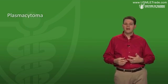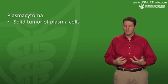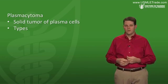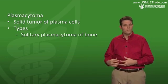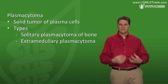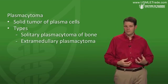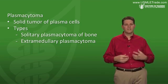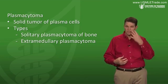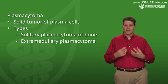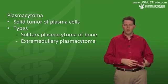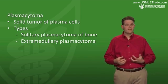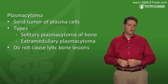A plasmacytoma is a solid tumor of plasma cells. There are two types: a solitary plasmacytoma of the bone, and an extramedullary plasmacytoma. The extramedullary plasmacytoma has a predilection for the head and neck, especially the nose. These plasma cell tumors are located outside the bone, and plasmacytomas do not cause lytic bone lesions.